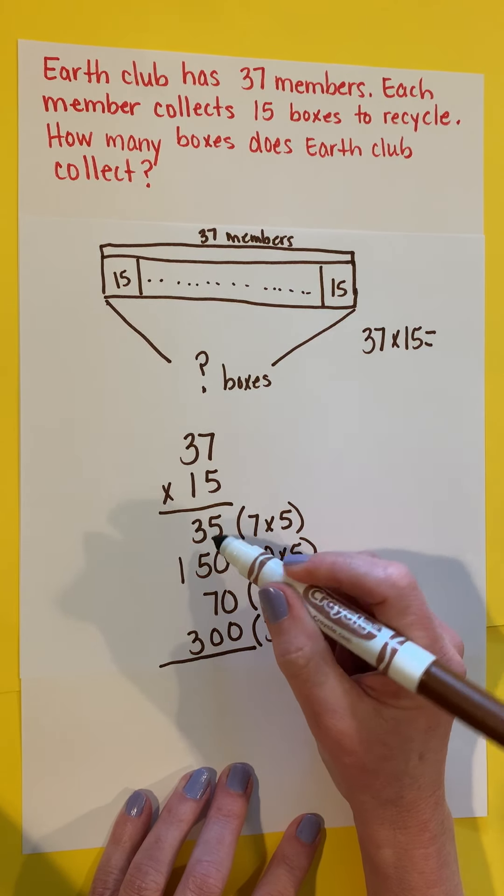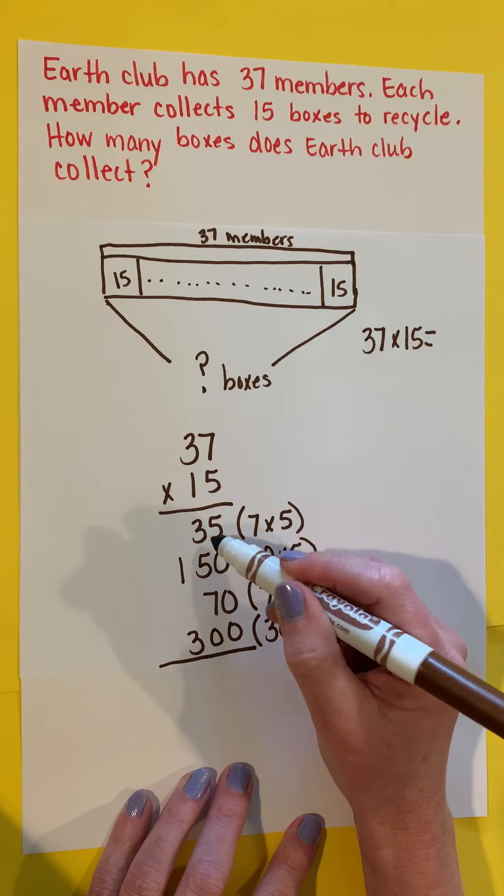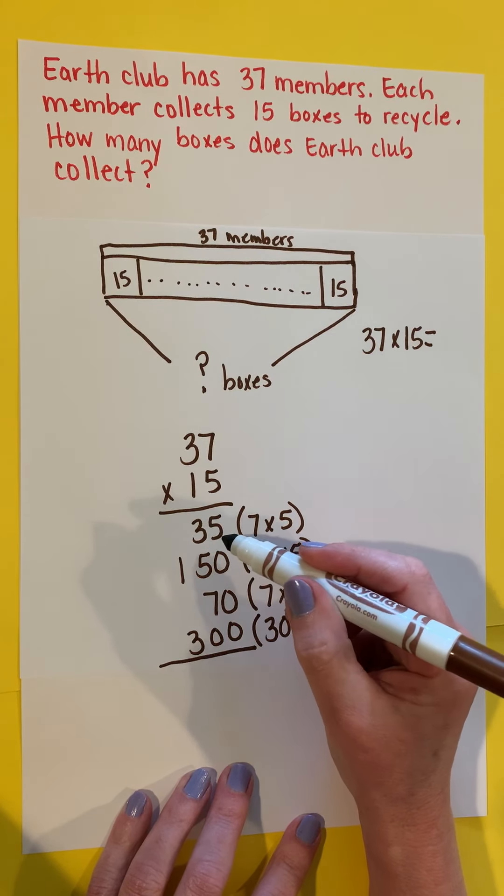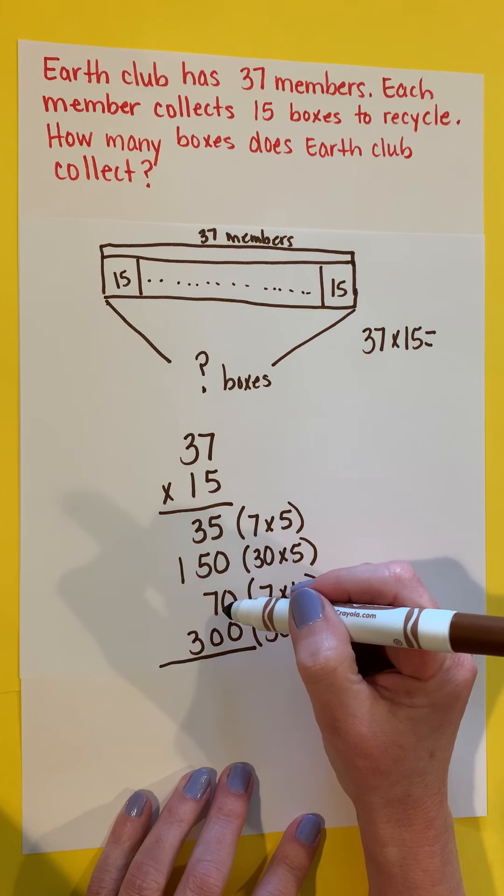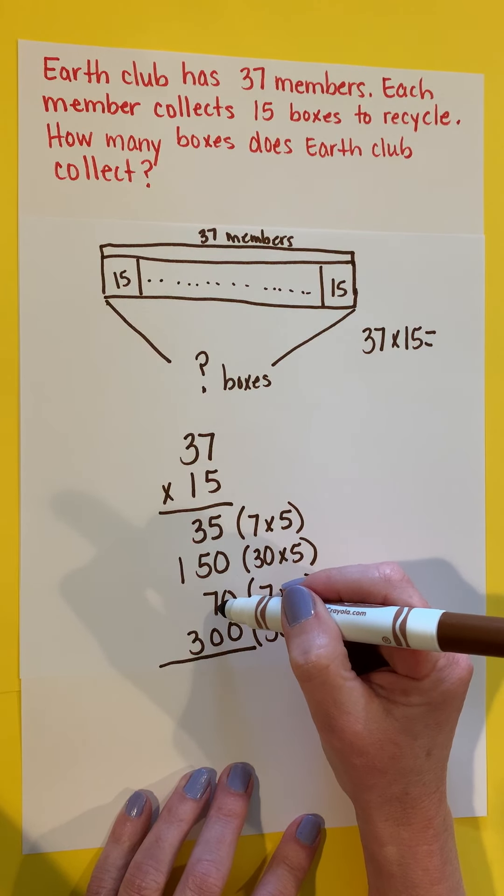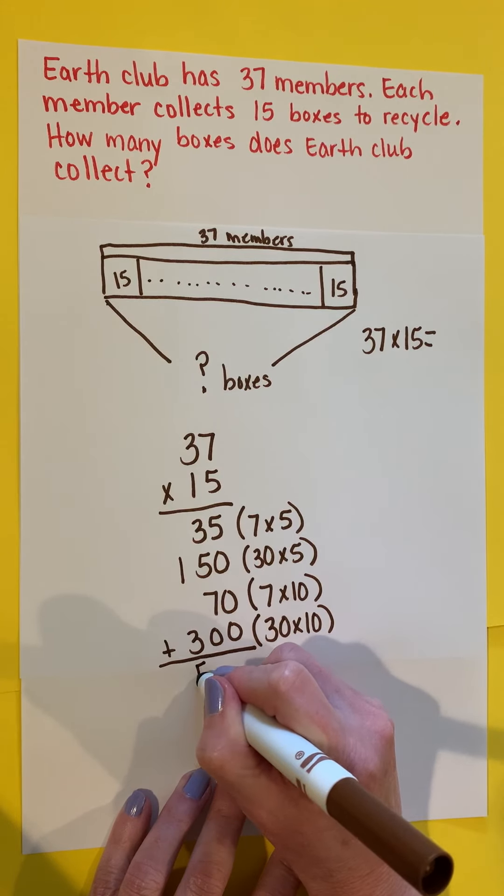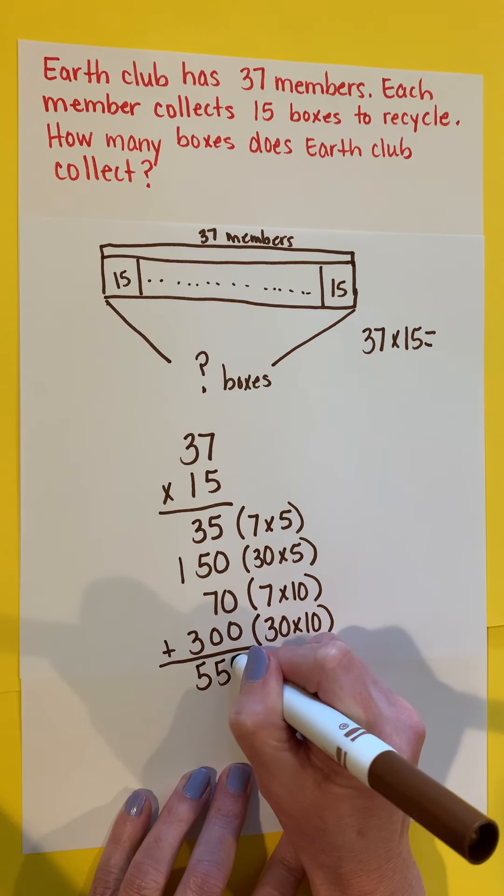Then I'm going to add these together. I'm going to put these 150 and 35 together first. That's 185. And then I'm going to add the 70, which gives me 255. And then I'm going to add the 300, and that's going to give me 555.